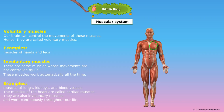Involuntary muscles are muscles whose movements are not controlled by us. These muscles work automatically all the time. Examples include muscles of the lungs, kidneys and blood vessels. The muscles of the heart are called cardiac muscles. They are also involuntary muscles and work continuously throughout our life.